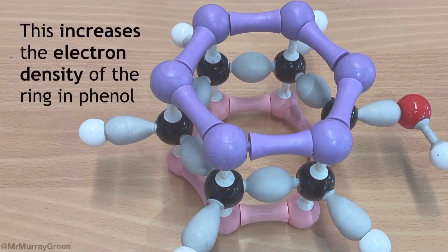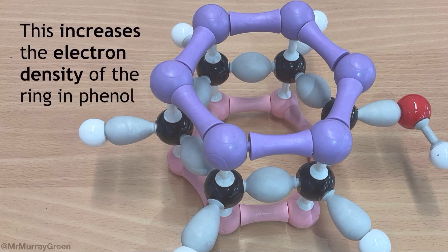The second point we need to make is about electron density. The fact that the lone pair has now become delocalized into the delocalized pi system increases the electron density of the ring in phenol compared to benzene. It's important to mention this as it shows the impact of the first point.